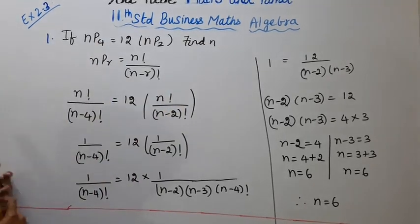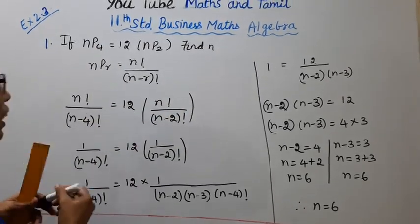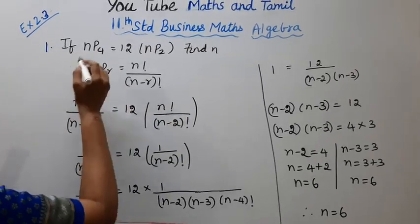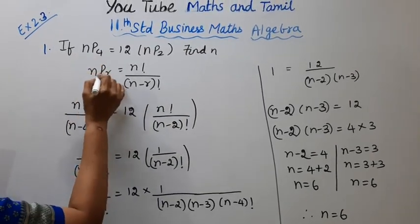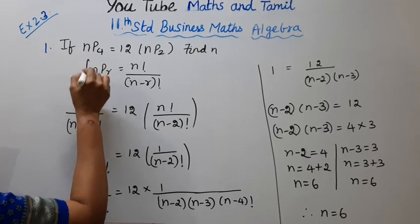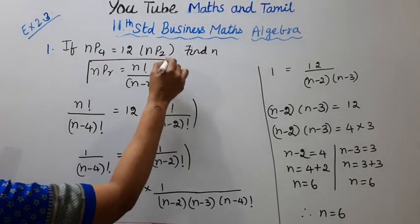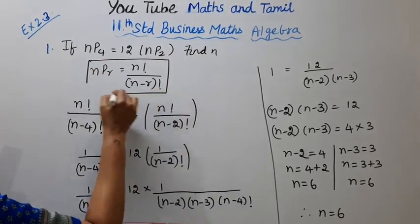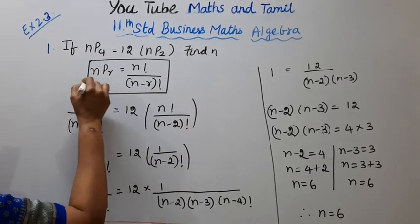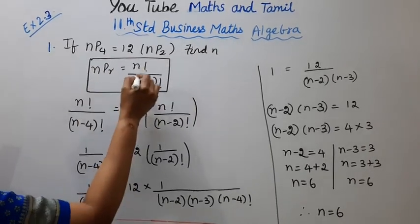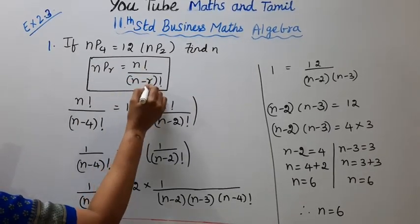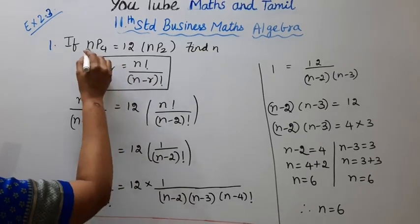For permutations, we use the NPR formula. The formula is: nPr equals n factorial divided by n minus r factorial.